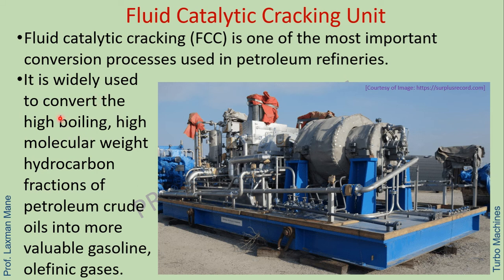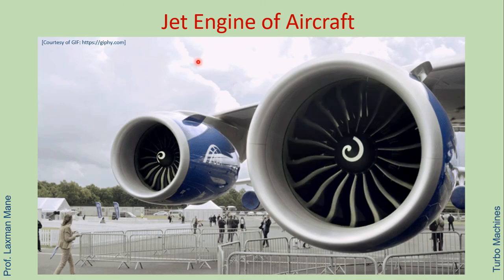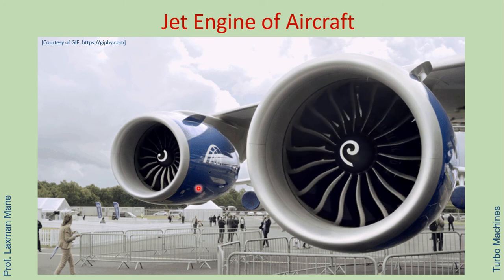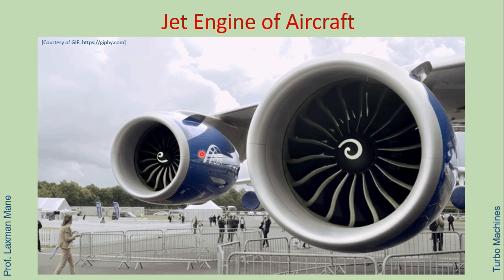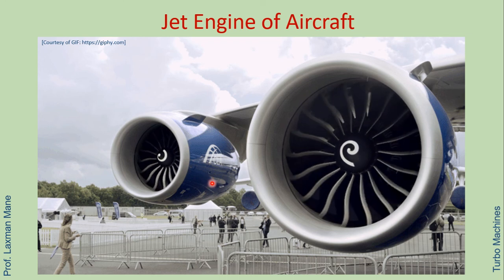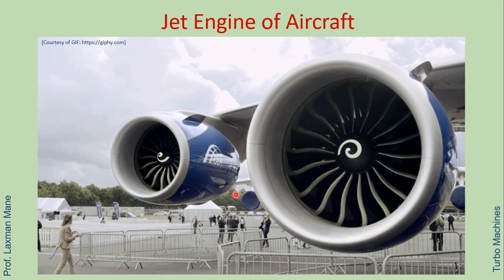The FCC unit is widely used to convert high boiling, high molecular weight hydrocarbon fractions of petroleum crude oil into more valuable gasoline and olefinic gases. Axial flow compressors are also used in aircraft as part of a jet engine, where the axial flow compressor is coupled with a gas turbine used in power generation. The axial flow compressor is used here for lightweight operation in aircraft.